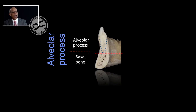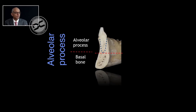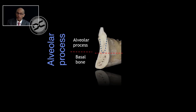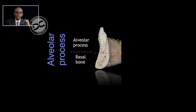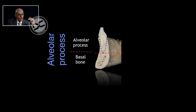You can see a buccolingual cut of a dry skull. You can also see in this slide a red dotted line. The red dotted line separates the alveolar process that contains the alveolar socket from the basal bone — in this case, the basal bone of the mandible. So above the red dotted line you can see the alveolar process, and below you can see the basal bone.